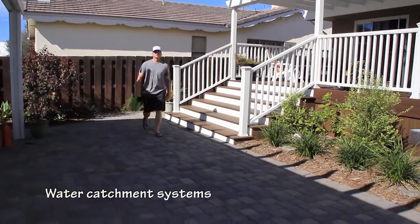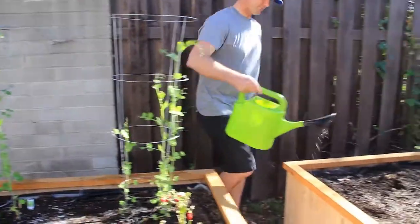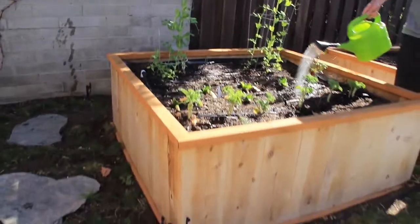Just blown away about how much we can actually catch from such a little rain. Just a couple weeks ago we got a third of an inch, and with about 40% of my roof collecting the water, I was able to harvest 175 gallons of water.